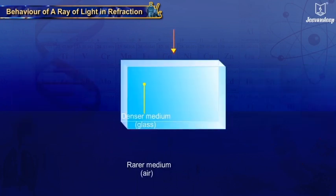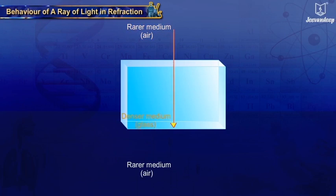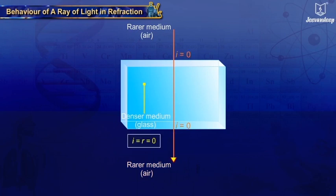If a ray of light is incident normal to the interface between any two media — whether passing from a rarer to a denser medium or from a denser to a rarer medium — the angle of incidence is zero, and so also the angle of refraction. In this case, the light passes undeviated from one medium to another.